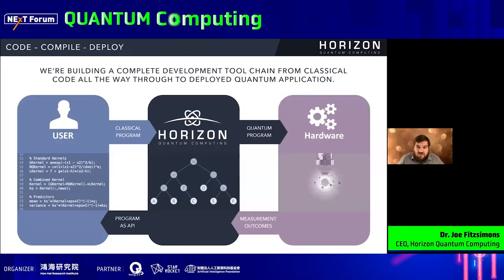What we're doing at Horizon is essentially building this abstraction layer. We're building the capability to go from classical code written in high-level programming languages like Python and MATLAB, and compile those down into something that can be run on a quantum computer. That means automatically constructing a quantum algorithm that does the same thing as the classical code but scales better, all the way down to the pulse sequences needed for a superconducting processor or ion trap — sitting between the user and the hardware so that we abstract away the need for the user to understand the hardware at all.